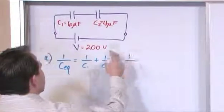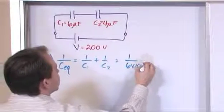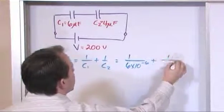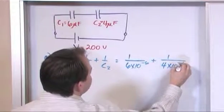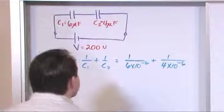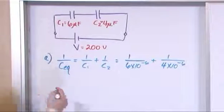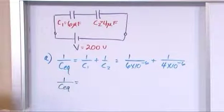So this is going to be equal to 1 over this capacitance here, 6×10^-6, plus 1 over this capacitor, which is 4×10^-6, because they're both microfarads. And then when we continue on down the line, 1 over the equivalent capacitor is going to be equal to...